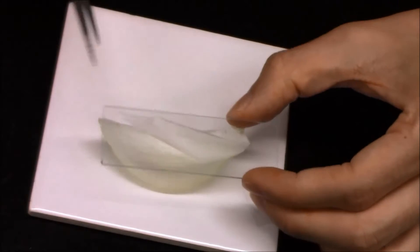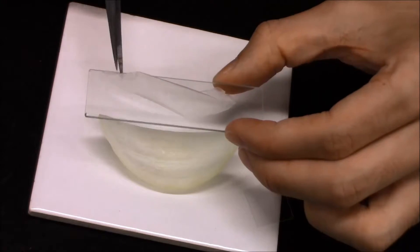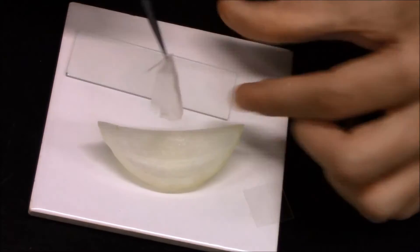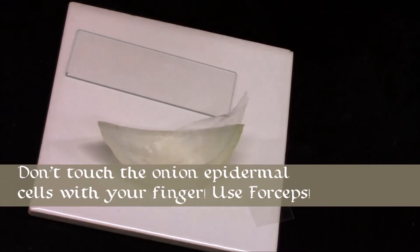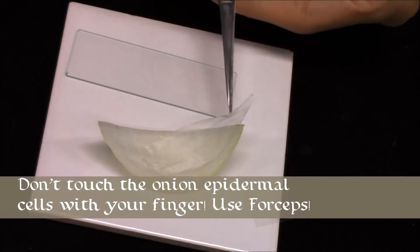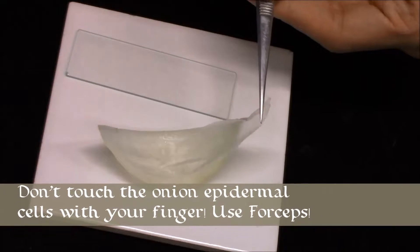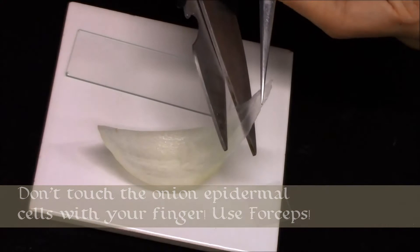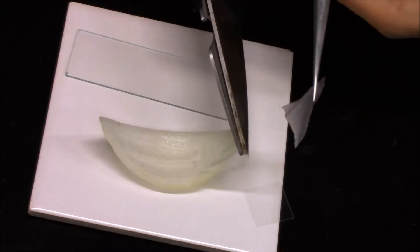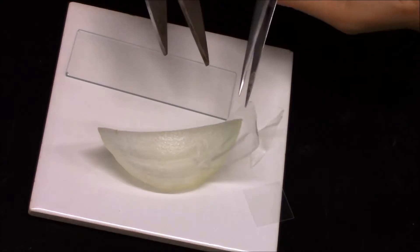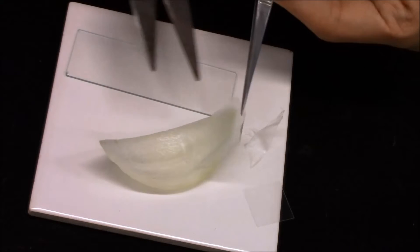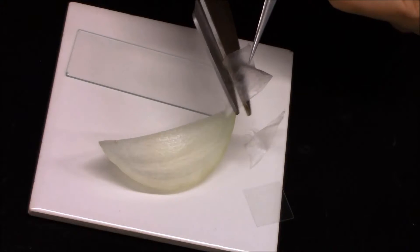So after tearing the thin layer of the onion epidermal cell, you see that when you put it on the microscopic slide, it's very large. So what you need to do is to cut it into smaller pieces, and try to hold it by using the forceps and cut it, and make it much smaller, and cut it in half.